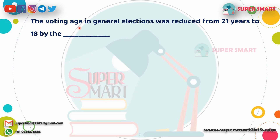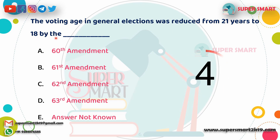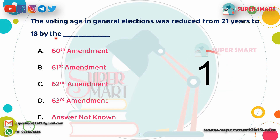The voting age in general elections was reduced from 21 years to 18 years by the 61st Amendment.